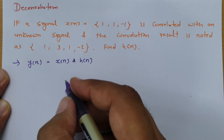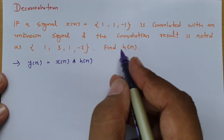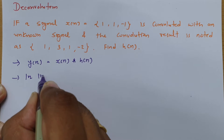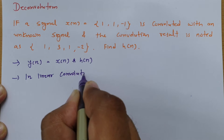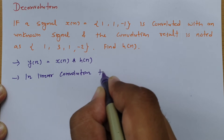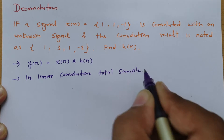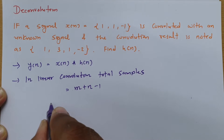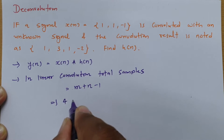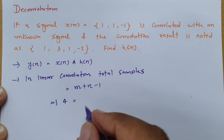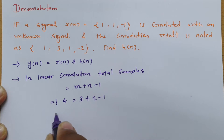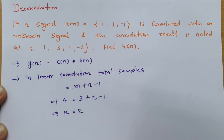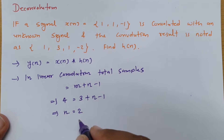Before solving this example, we first need to understand how many samples are in linear convolution. In linear convolution, total samples equals m plus n minus 1. In this case, total samples are 4, and samples of x of n are 3. So the number of samples in h of n will be n equals 2 — there are 2 samples in h of n.